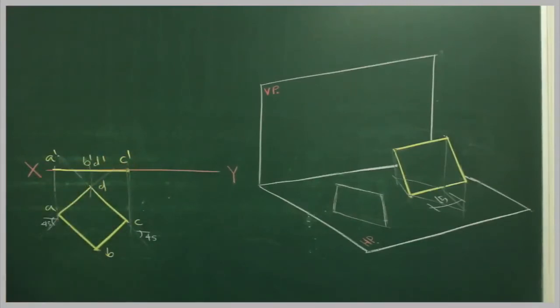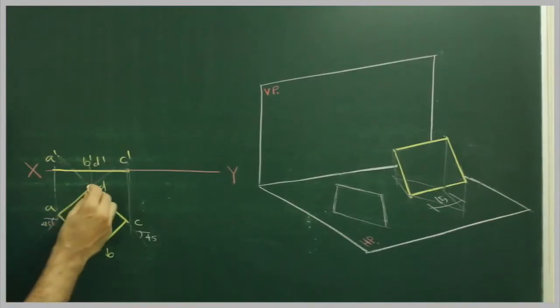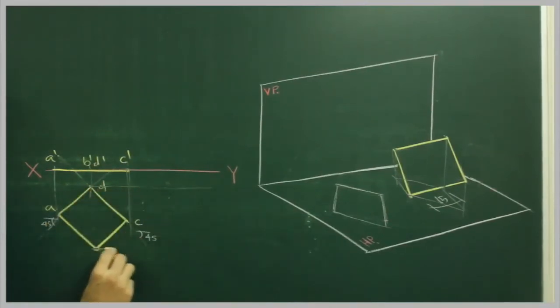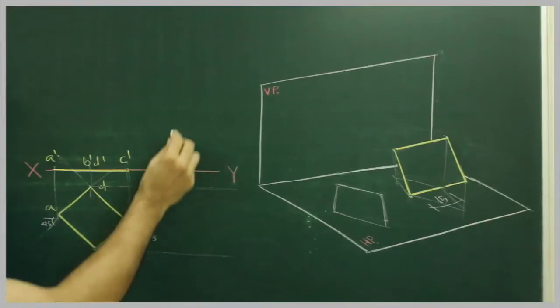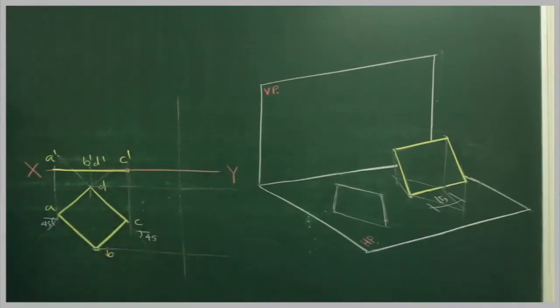After that, it is inclined to horizontal plane in such a fashion that in top view you see a rhombus with one of its diagonals as 15 mm. So what we will do, first we will draw the rhombus.